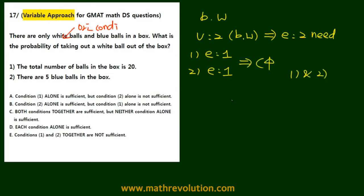If we look at condition one and two together, we have b is equal to 5 and b plus w is equal to 20. So 5 plus w is equal to 20 and white we solve for that is 15.